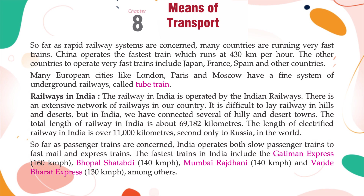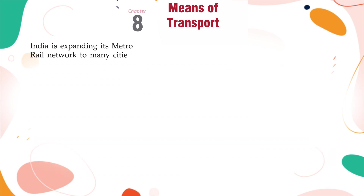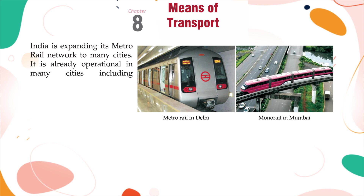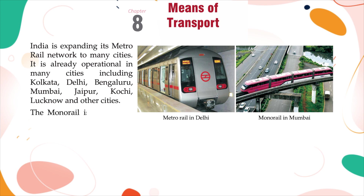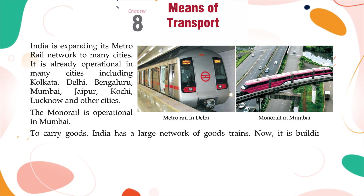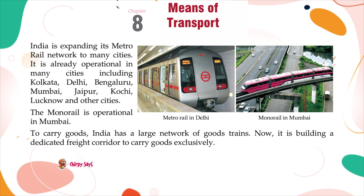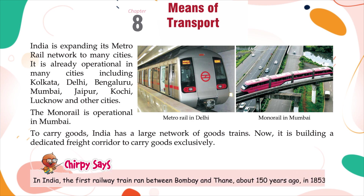Metro rail in India is already operational in many cities including Kolkata, Delhi, Bangalore, Mumbai, Jaipur, Kochi, Lucknow, and other cities. The monorail is operational in Mumbai. India also has a large network of goods trains, and is now building a dedicated freight corridor to carry goods exclusively. India's first railway train ran between Bombay and Thane about 150 years ago in 1853.